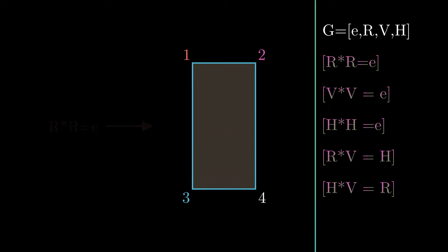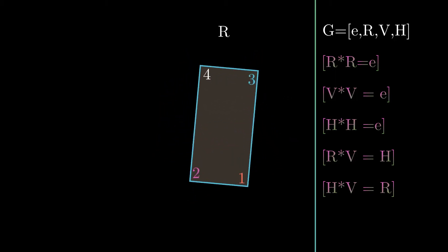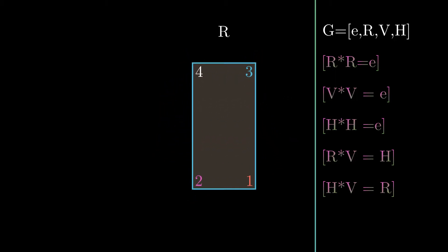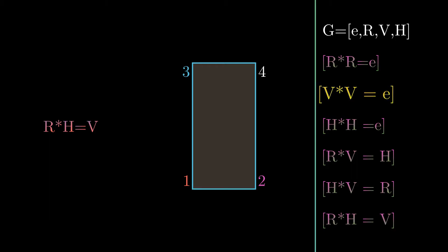Likewise, there is another property: rotation combined with a horizontal flip leads to a vertical flip. And as we know from the second property, if we flip vertically once again, we get the original rectangle.